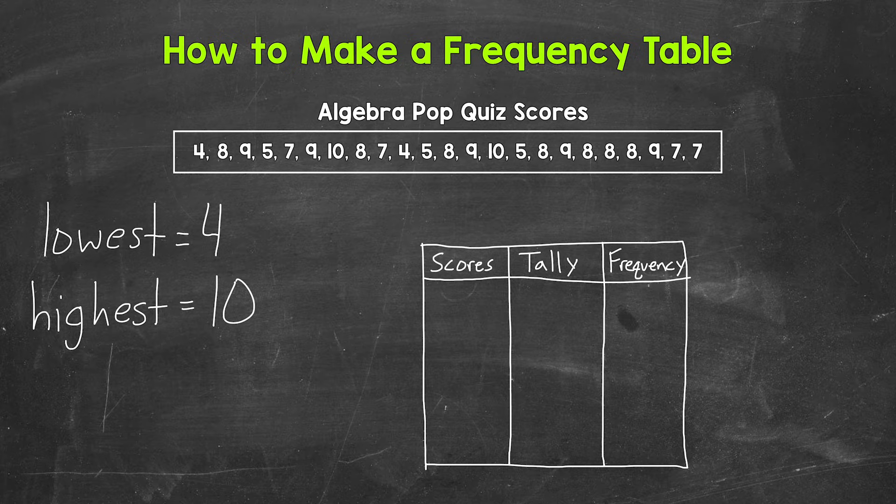Now that we have our three columns and our column headers, so the columns are labeled, we need seven more rows for our pop quiz scores. So four through 10.